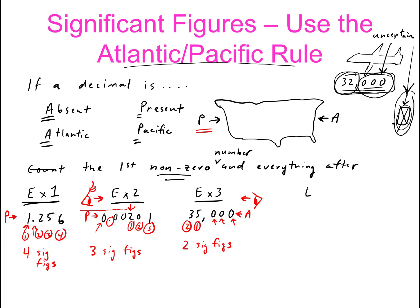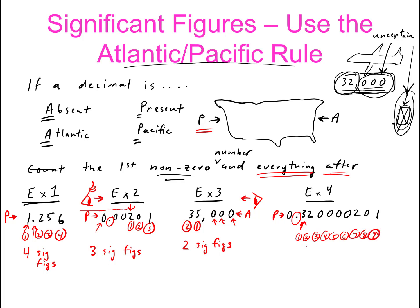One more example: 0.320000201. Is the decimal point present? Yes. So we're going to count from the Pacific side. This 3 is not a zero, so it counts, and everything after counts. So 1, 2, 3 — even that zero counts, even though it's a zero, because we're taking this statement literally: the first non-zero and everything after. So 3, 4, 5, 6, 7, 8, 9 — all these digits are significant. This number has nine sig figs.